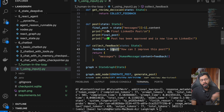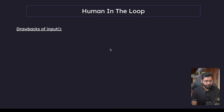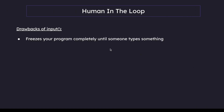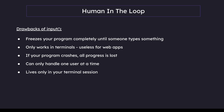So let's look at the drawbacks of using input, and then we'll segue into learning about another class that LangGraph provides called interrupt. The drawbacks of input involve: it freezes your program completely until someone types something; it only works in terminals and is useless for web applications; if your program crashes, all progress is lost; it can only handle one user at a time; and it only lives in your terminal session.